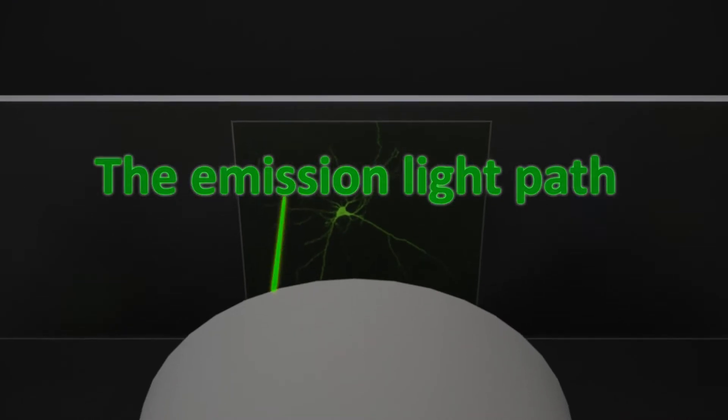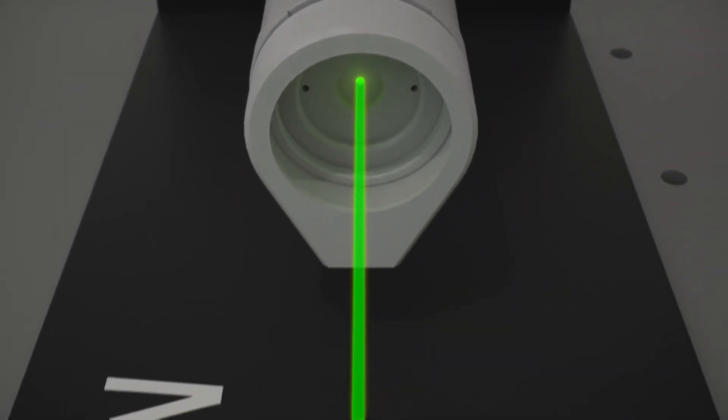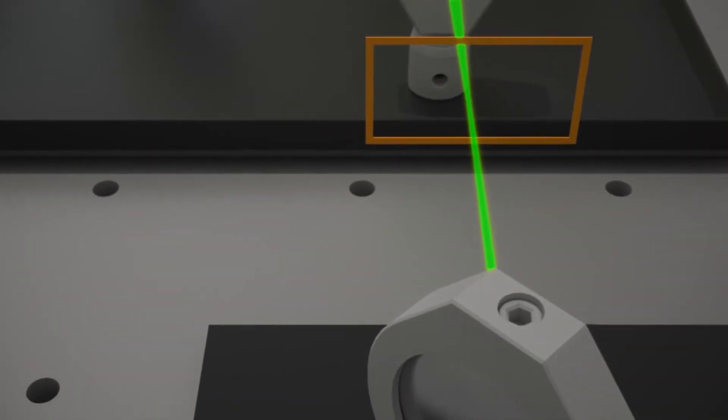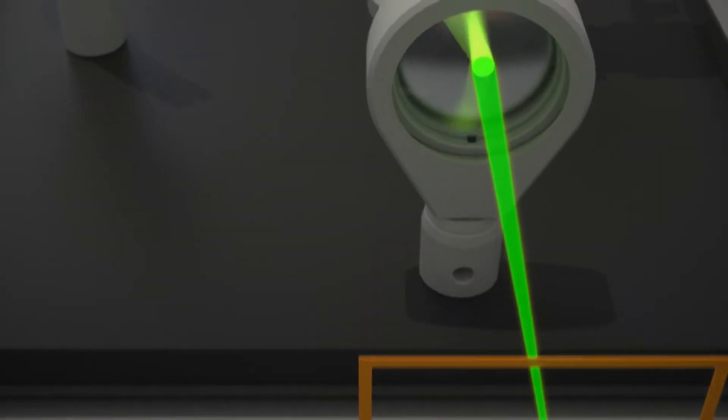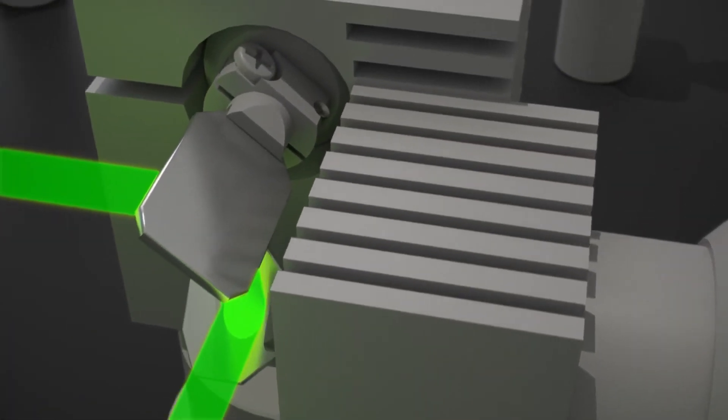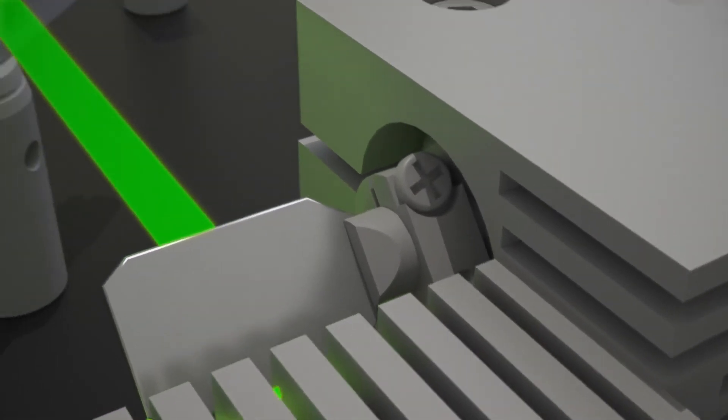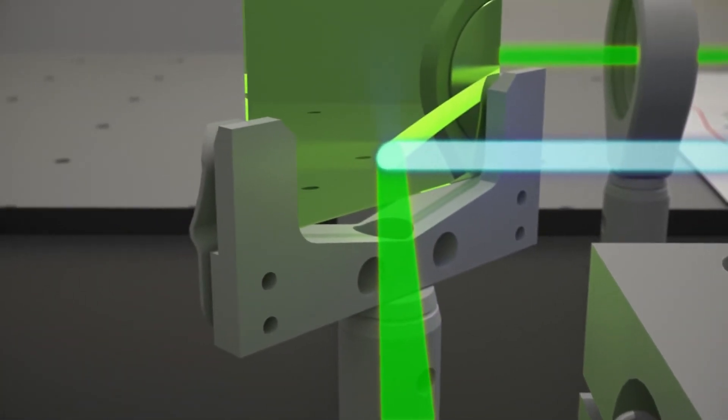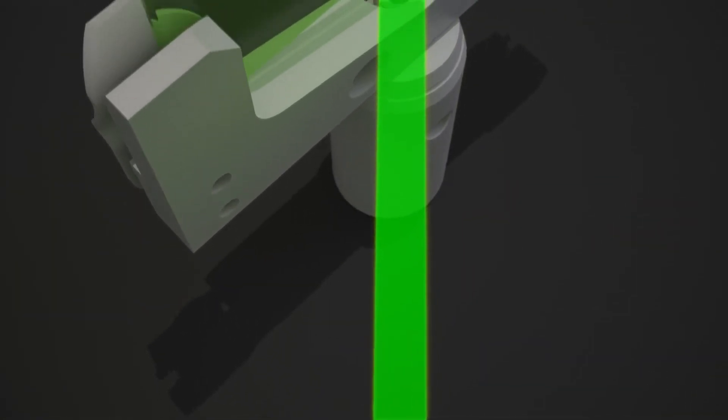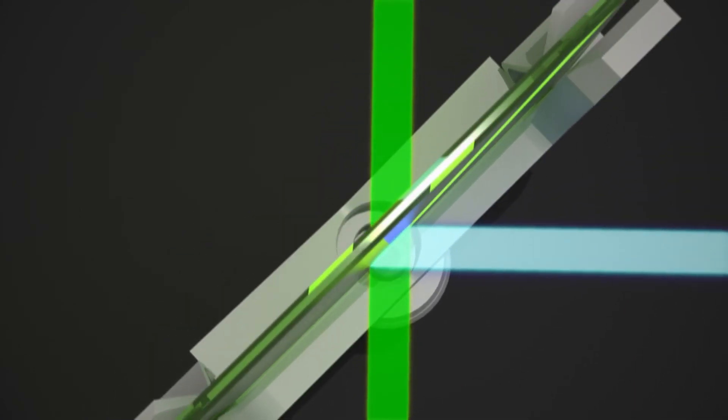The emission light path. The emission light propagates through the microscope towards the output port. It passes the scan lens and hits the X and Y scanning mirrors and travels in the opposite direction of the excitation light towards the dichroic mirror. There, it arrives at the dichroic mirror allowing only the emission light to pass through.